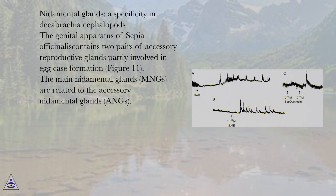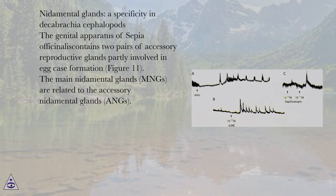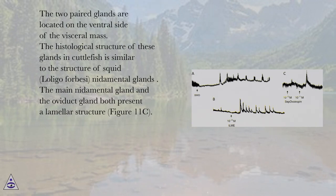Nidimental glands: a specificity in decabrachia cephalopods. The genital apparatus of Sepia officinalis contains two pairs of accessory reproductive glands partly involved in egg case formation, figure 11. The main nidimental glands, MGs, are related to the accessory nidimental glands, AGs. The two paired glands are located on the ventral side of the visceral mass.